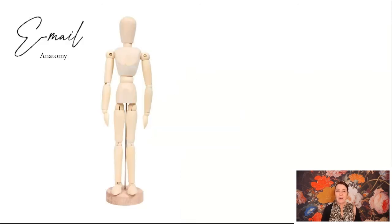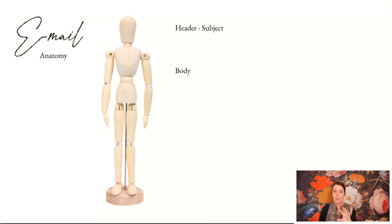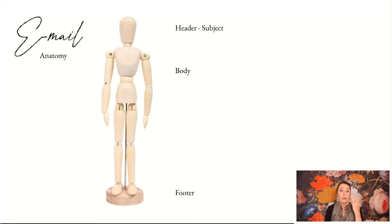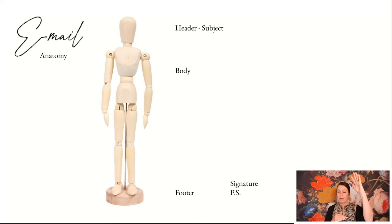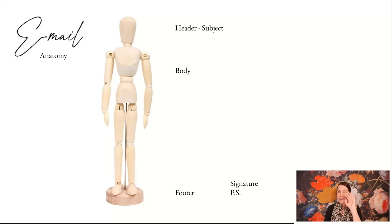We briefly looked at the anatomy of an email — there is a certain structure to an effective email. That header, the subject line, which sometimes takes more time than the whole email itself because it helps someone decide whether they're going to open it or not. Then the body of the email — what you want to say. The footer, your signature, contact details, maybe inspirational quotes and branding elements, all communicating who you are and where people can find you. Adding that PS is powerful — typically subject line and PS are what people are reading.